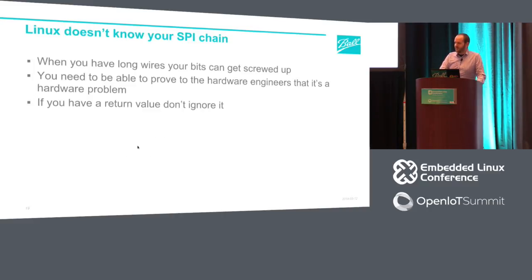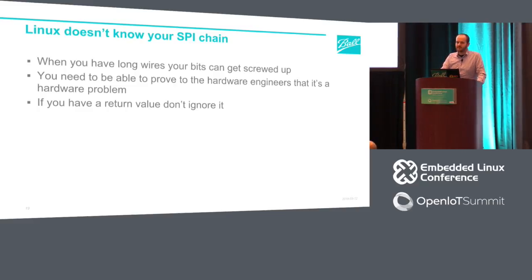Linux doesn't know your SPI chain — always check your return values. We were only sending data out our SPI chain and had no practical reason to read it back. But you have to, especially in RF-heavy environments where wires pick up signals and bits flip. You need to be able to prove to your electrical engineer that it's a hardware issue. If a bit flips and you can't prove it, he'll say it's Linux. But if you read it back and it was different too, then he plugs in the oscilloscope and finds the bit flipping right there.